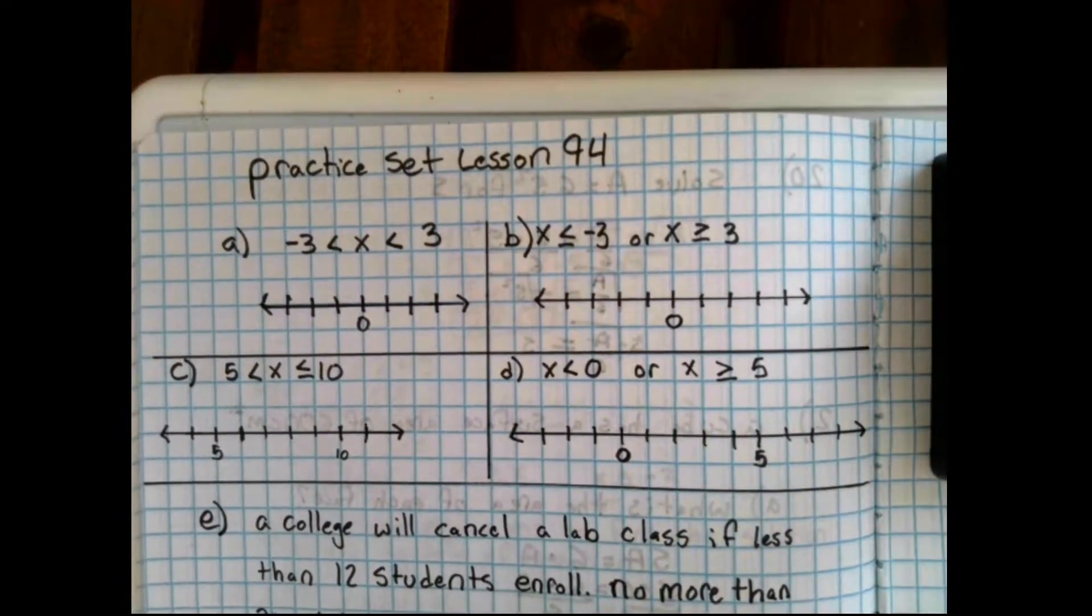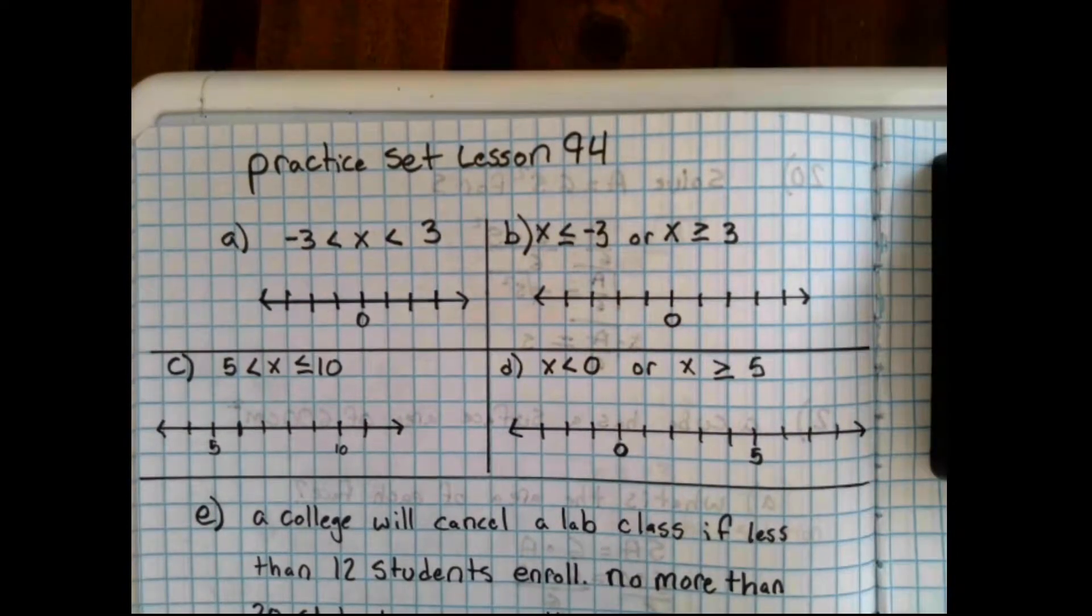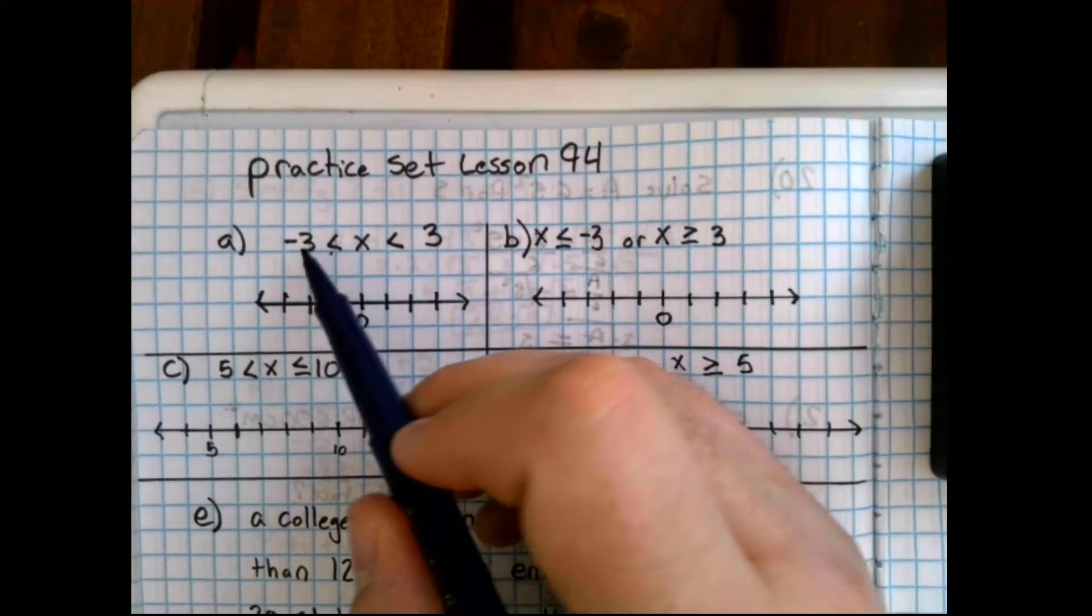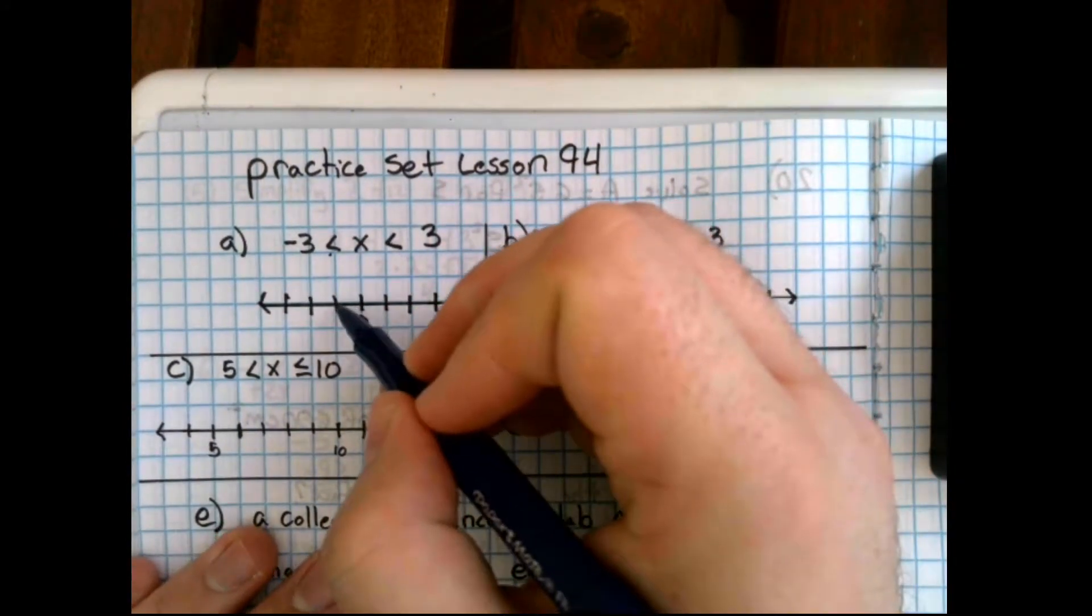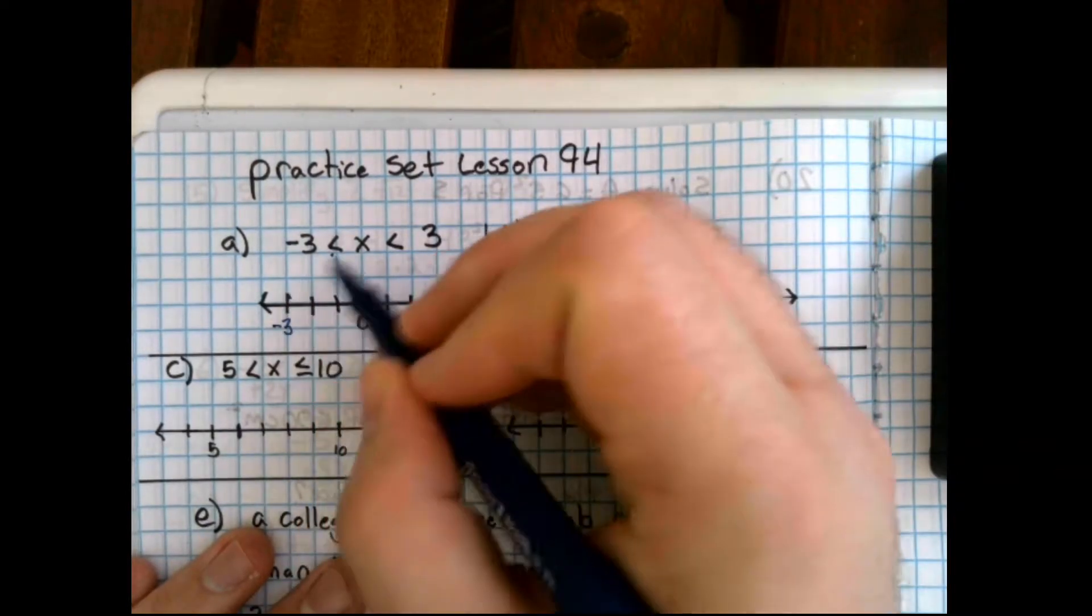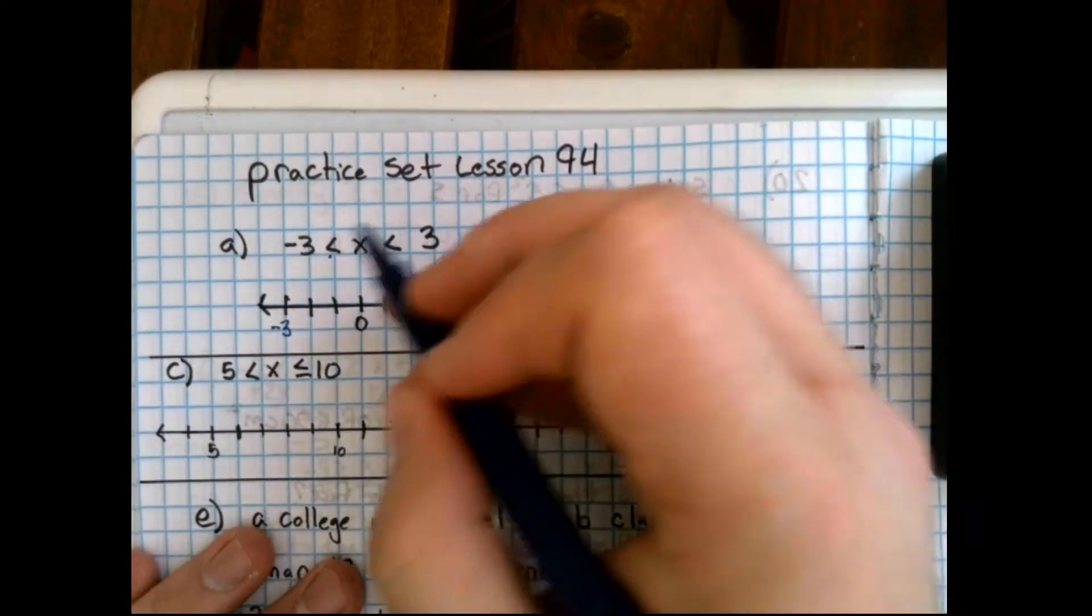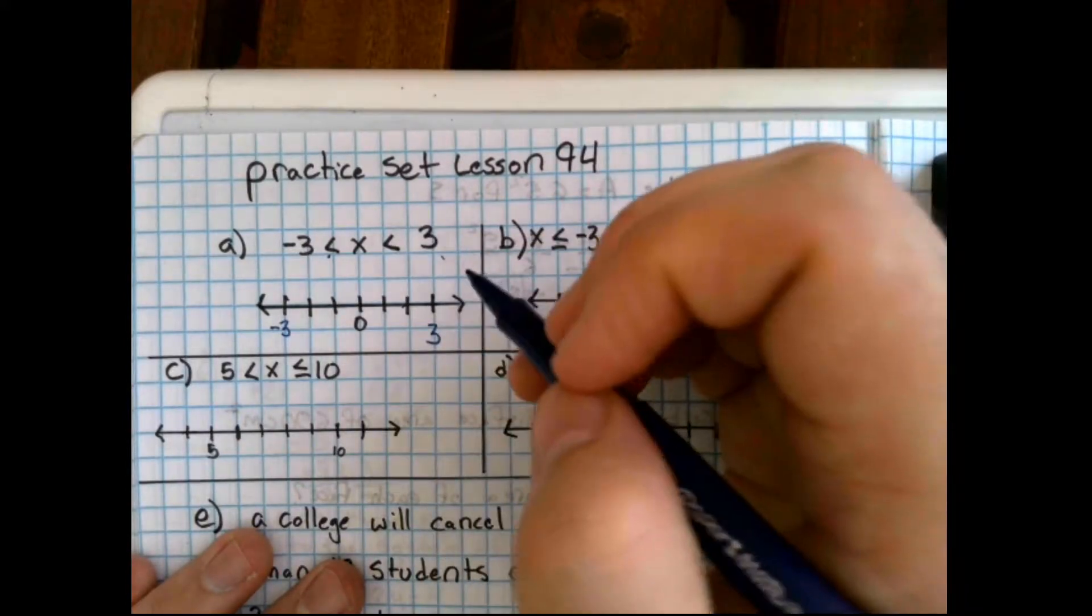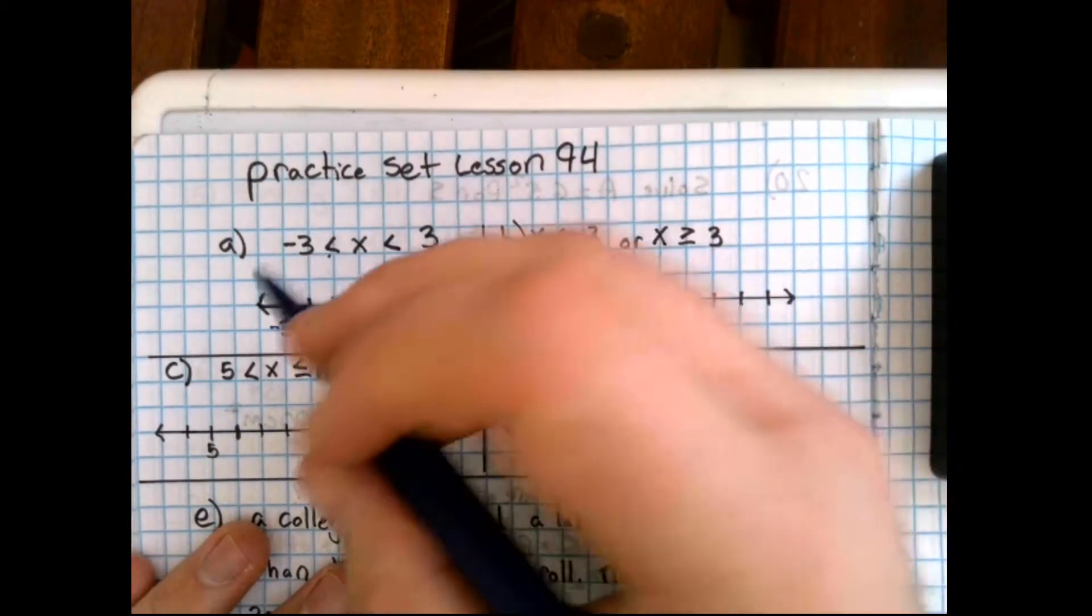Now, practice set problem A says negative 3 is less than x, and x is less than 3. Another way of looking at this is x is greater than negative 3, x is less than 3. So, we're going to go back down to negative 3, and we're going to go up to 3. These are the two points in our problem. We've already isolated x, we don't need to do any arithmetic or algebra to solve for this. Now, looking at this, x is less than 3, x is greater than negative 3.